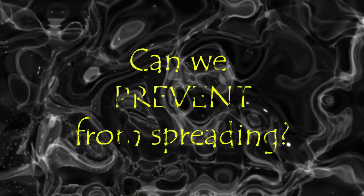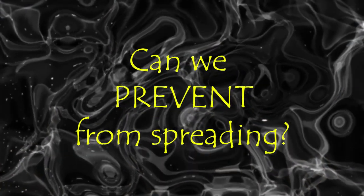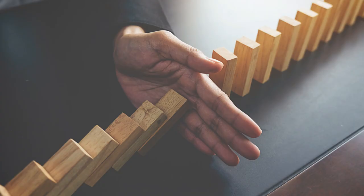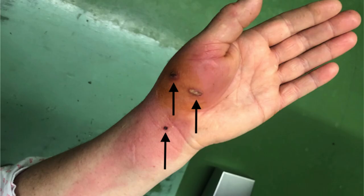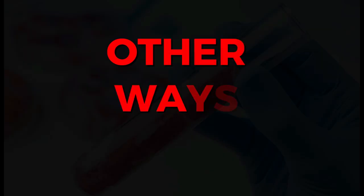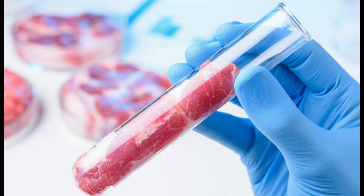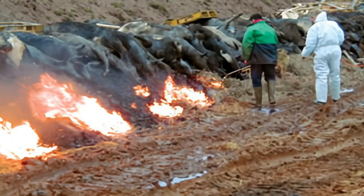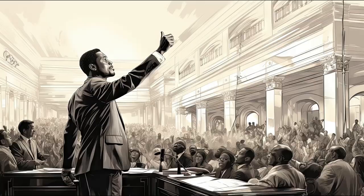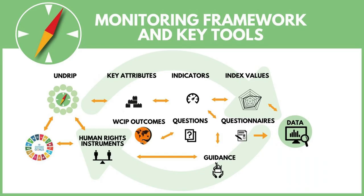Can we prevent zombie disease from spreading? Yes. The best way is to avoid contact with infected animals and their remains. Other measures include testing meat for CWD before consuming it, culling infected animals, raising public awareness, and establishing monitoring and reporting mechanisms.